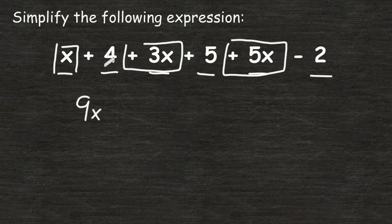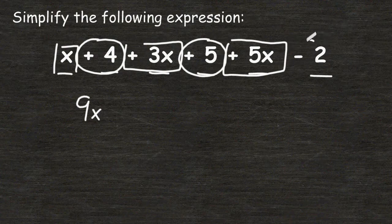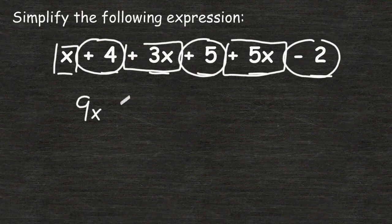Next we have to combine all of our constants together. So we are going to combine positive 4 and positive 5, which is a total of 9. But then we have to take that total of 9 and subtract 2 from it. And 9 take away 2 is 7, so we have to write plus 7 after 9x.